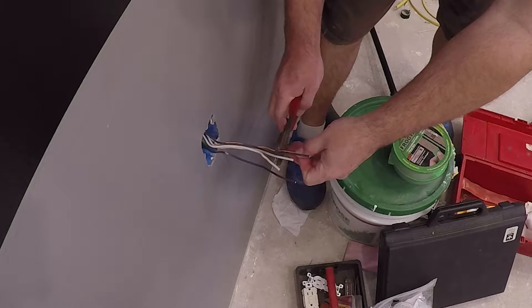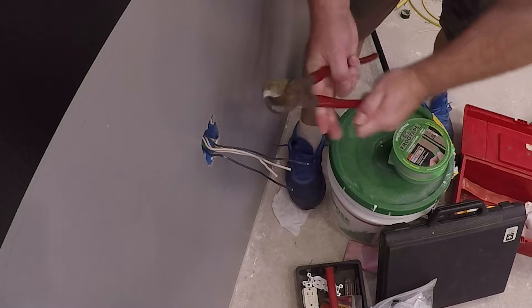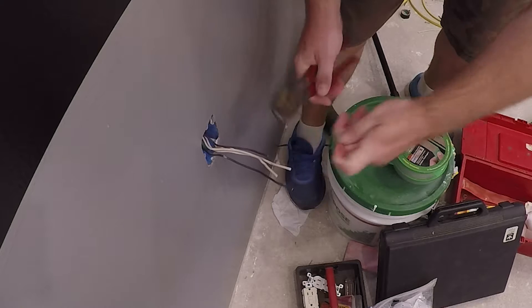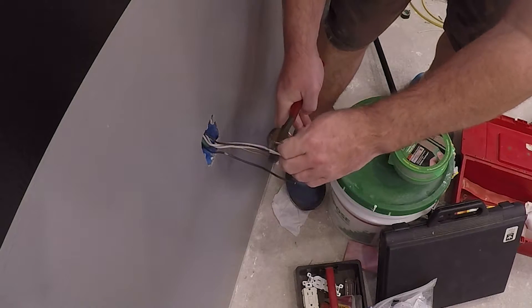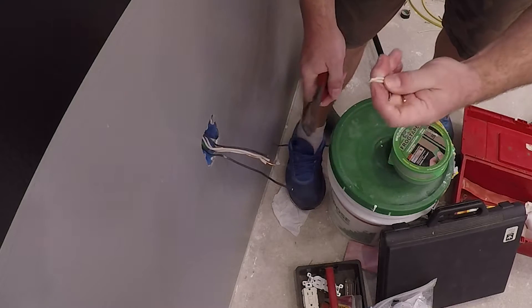For electrical rough wiring inspection, you have to have the grounds connected. The hots and the neutrals can float since you don't really have anything connected.